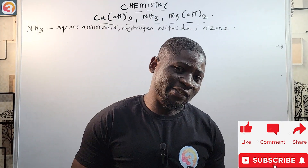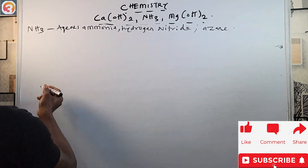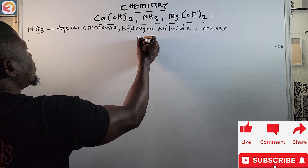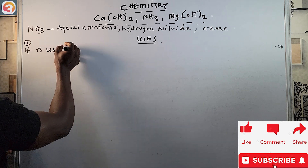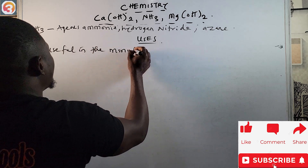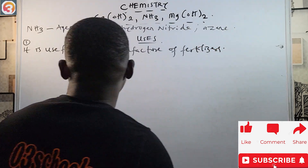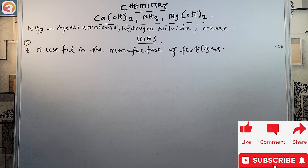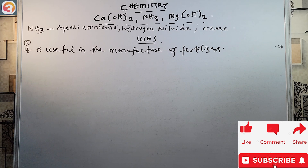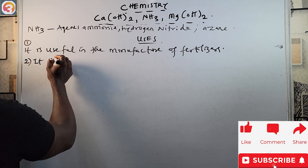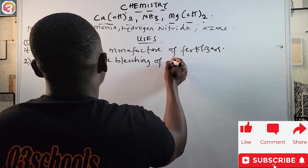Ammonia is used mostly as fertilizers — it is very useful in the production of fertilizers. Number one use: it is useful in the manufacture of fertilizers. It is also useful in the bleaching of clothes and as a detergent.